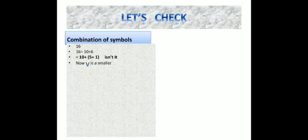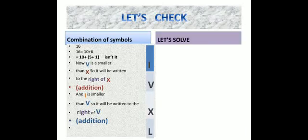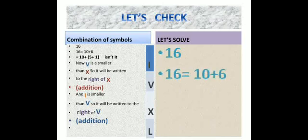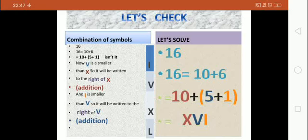The combination for 16, when we split into tens and ones, is 10 plus 6. But 6 doesn't have a symbol — we only have I, V, X, and L — so 6 has to be split into 5 plus 1. Now V is smaller than X, so it will be written to the right of X since we are adding. And I is smaller than V, so it is written to the right of V. Therefore the symbol for 16 is XVI.